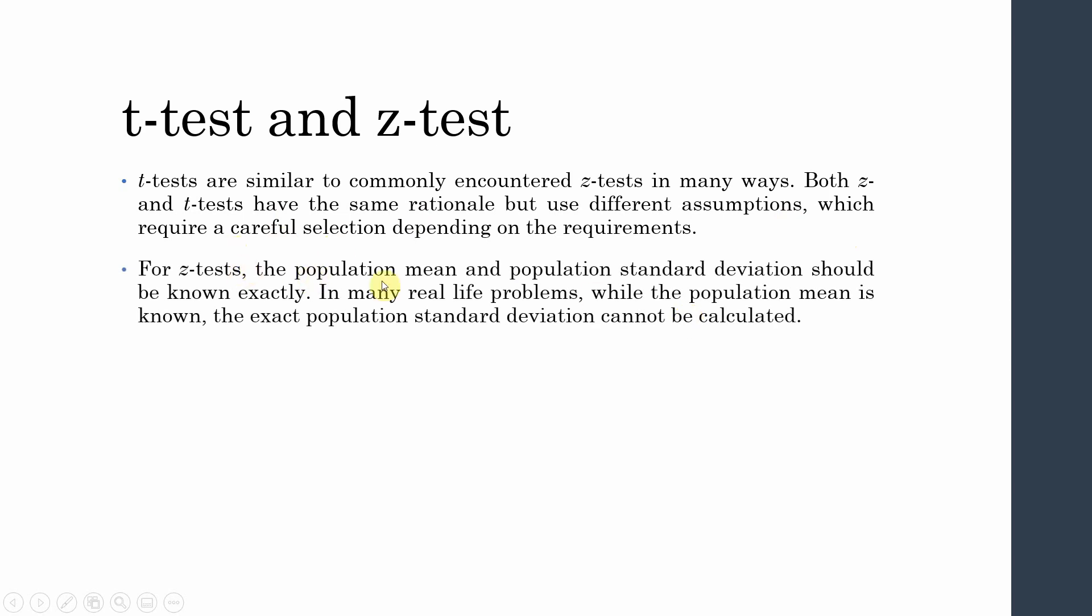For z-tests, the population mean and population standard deviation should be known exactly. For t-tests, you need a sample. Both tests are similar, but z-tests are applied to the population while t-tests are applied to samples.